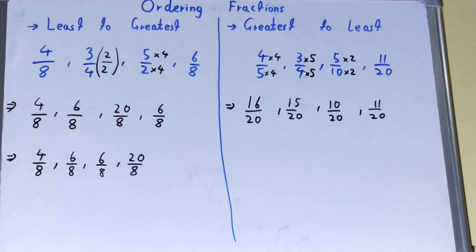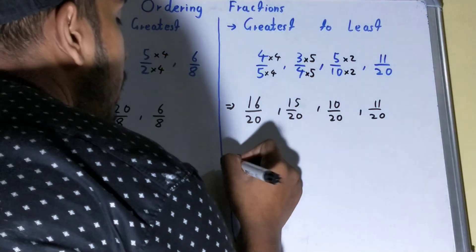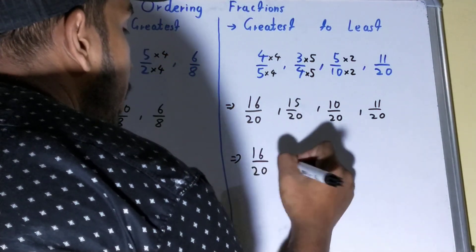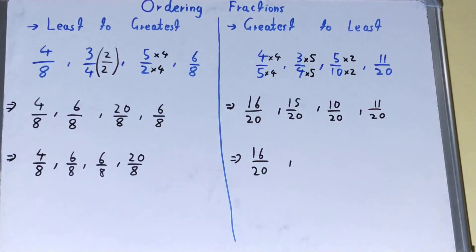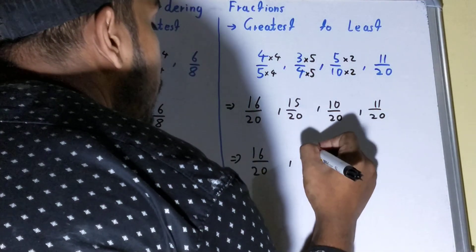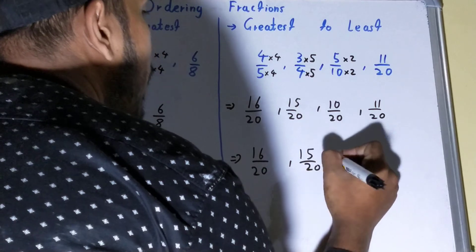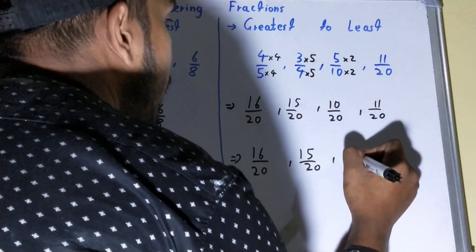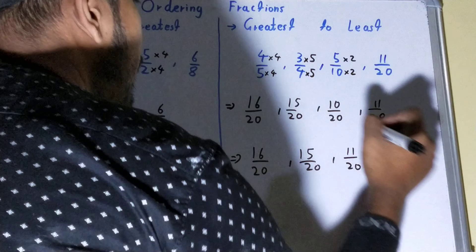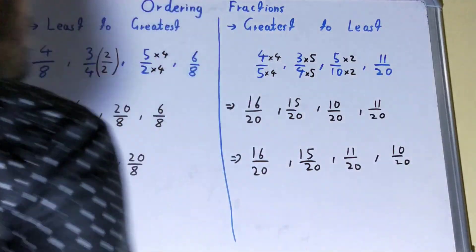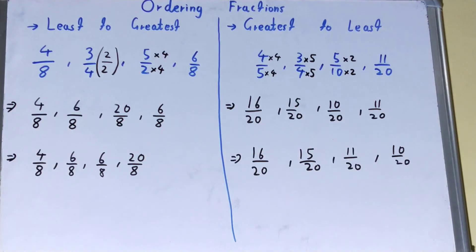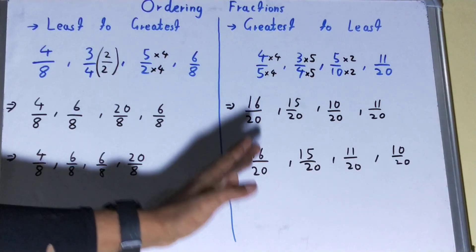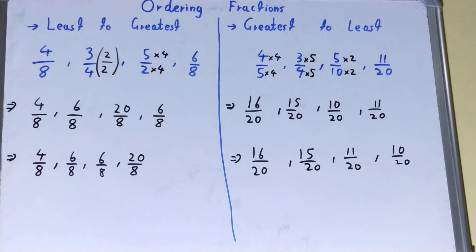Now we look at the numerators for the highest value. The highest numerator is 16, so we write 16 over 20 first. Next is 15 over 20, then 11 over 20, then 10 over 20. That's the arrangement from greatest to least. The concept is the same: get a common denominator for all fractions, then compare the numerators from greatest to least.